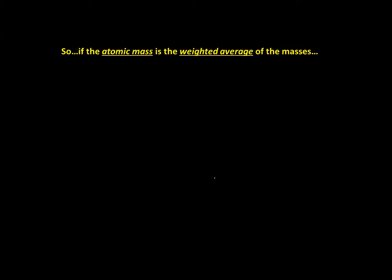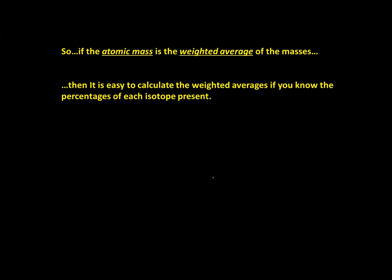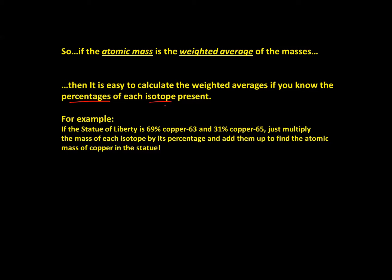So if the atomic mass is the weighted average of the masses, then it should be easy to calculate the weighted average if you know the percentages of each isotope present in a sample. It works like this — let's take a sample of copper. The Statue of Liberty is made of copper; it is 69% copper-63 and 31% copper-65. To find the weighted average we simply multiply the mass of each isotope by its percentage. Copper-63 represents 69% of the copper in that sample.